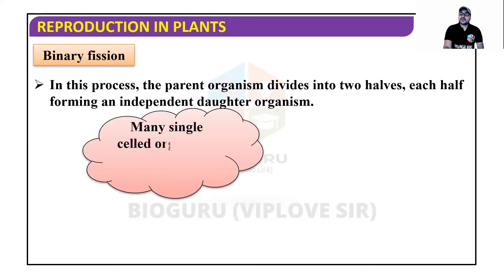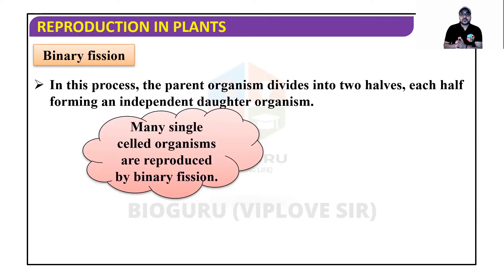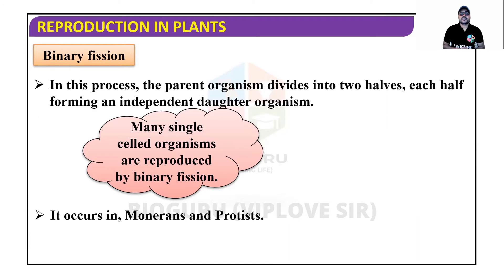The first type is binary fission. In this process the parent organism divides into two equal halves — 'binary' means two, 'fission' means division — each half forming an independent daughter organism. Many single-celled organisms like bacteria and amoeba reproduce by binary fission. In multiple fission, one organism divides into more than two parts, whereas in binary fission it divides into exactly two parts.